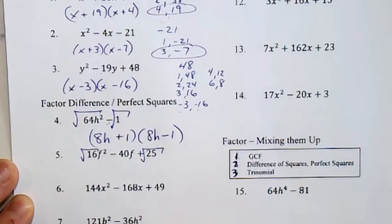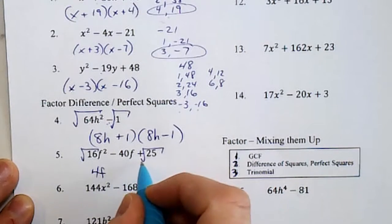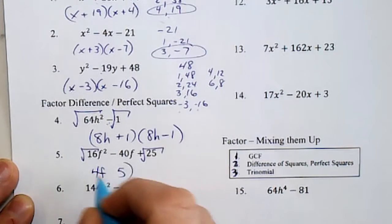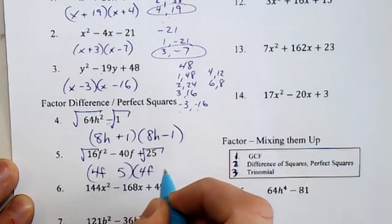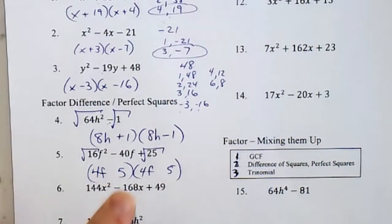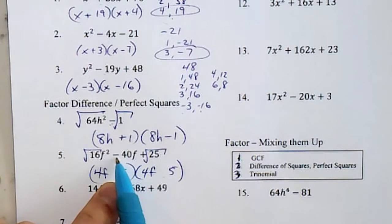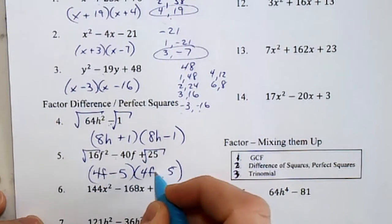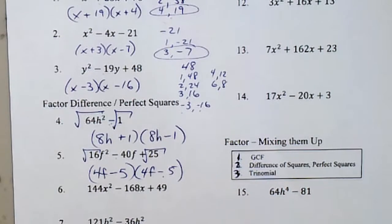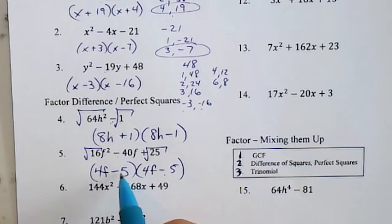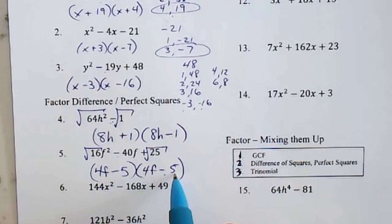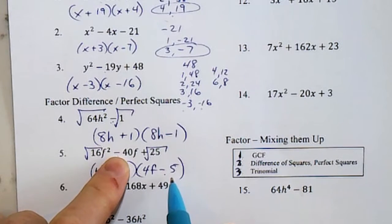Ignore the middle term. Now this one's a trinomial, so we have to have matching signs on both binomials. This one's negative, so both are negative. It's a perfect square, so I'm going to double check my work. Minus 20, minus 20, it adds up to negative 40. It works.